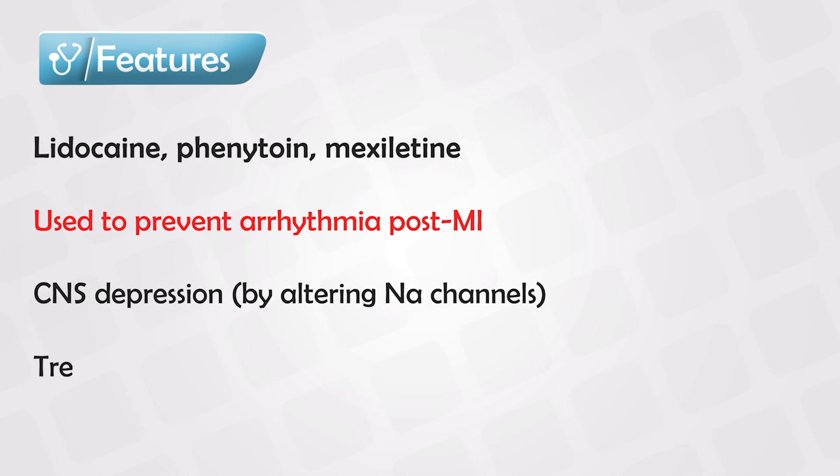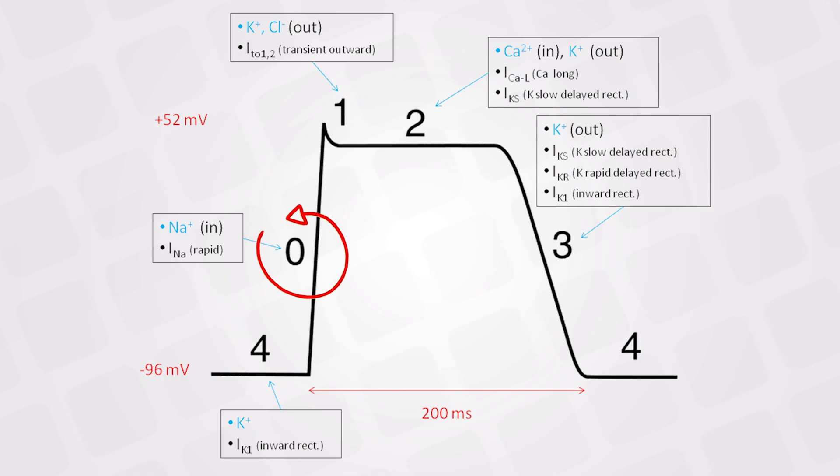Patients who take digoxin in high doses might have digoxin toxicity, and this can also cause arrhythmias. Class 1B is ideal in treating the arrhythmias that are caused by digitalis toxicity. And if we look at the action potential, we can see that class 1B affects phase 0.